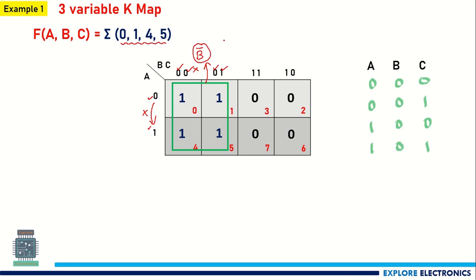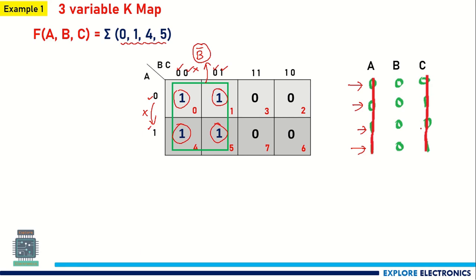You can also verify this way: in this group, cell 0 gives A=0, B=0, C=0; cell 1 gives A=0, B=0, C=1; cell 4 gives A=1, B=0, C=0; and cell 5 gives A=1, B=0, C=1. A takes values 0,0,1,1 — cancel it out. C takes values 0,1,0,1 — cancel it out. B is not changing throughout the group, so we write B̄. Only one group exists, so the output is B̄.